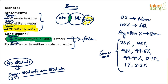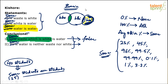Look at the second conclusion: 'some water is neither waste nor white'. Looking at the basic diagram, this seems correct — I can take some portion of water and say this water is neither waste nor white, shown as the blue shaded region. So the second conclusion satisfies the basic diagram. But satisfying the basic diagram does not mean it is true — you have to check other possible diagrams as well, because a conclusion is definitely true only if it satisfies all possible diagrams.